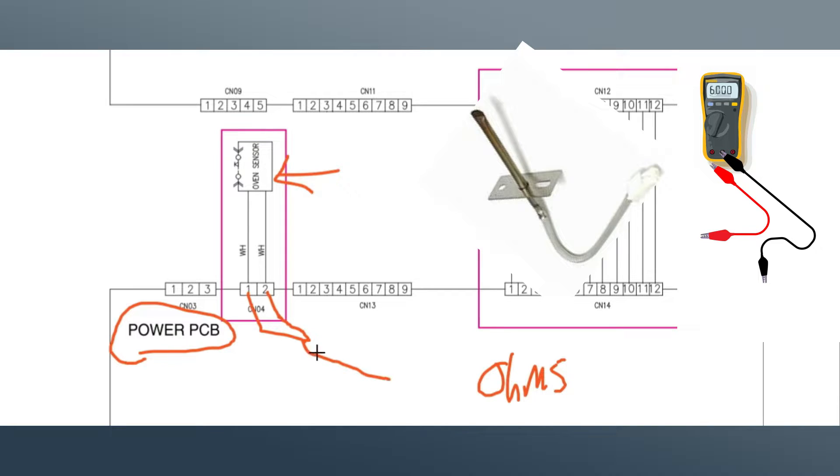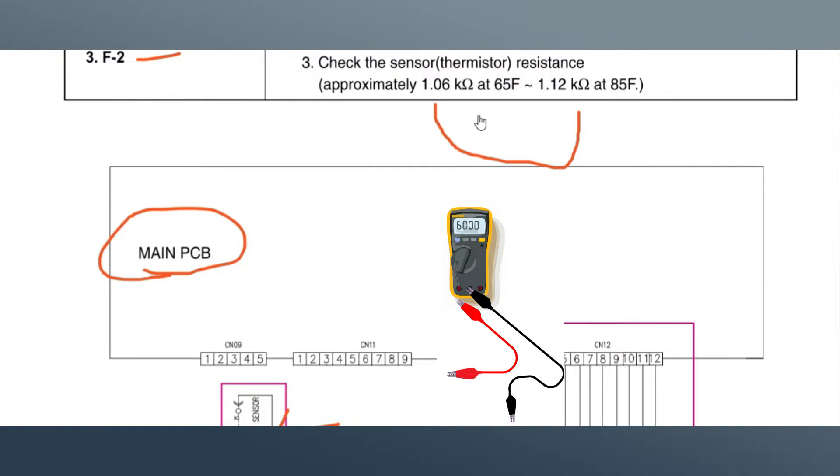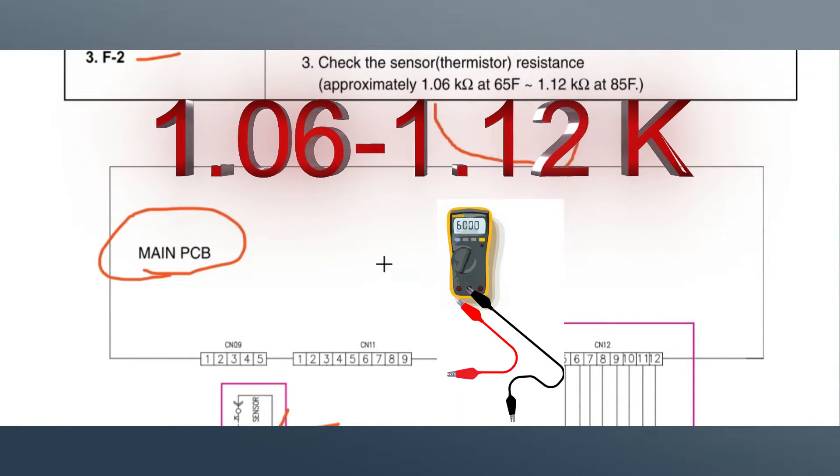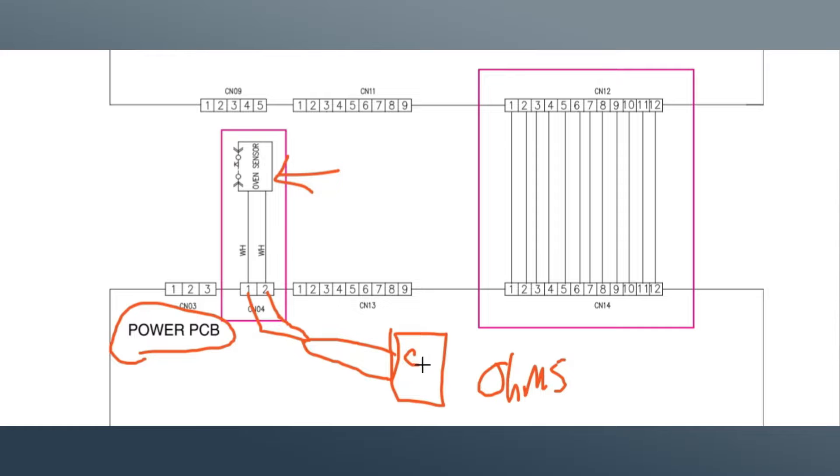You'll hook your multimeter up to this oven sensor. Disconnect it, it should read with the room temperature. So say in your home or inside your oven, it's in this temp between 65 and 85 Fahrenheit. You should read 1.06 to 1.12 here on your multimeter. So I'm going to draw my little funny multimeter, check out my artwork. Horrible, but that's my multimeter. So we should read that reading. Even if we read 1.09, we're in that range.